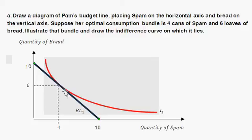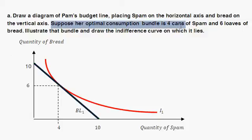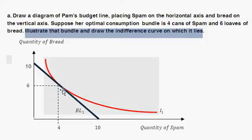You can think of this as like a topographic map — the indifference curve represents altitude, and the higher you are, the higher the utility. There's a hill going off in this direction, with altitude lines representing higher and higher utility. Pam is going to maximize her utility by choosing the consumption bundle where the highest indifference curve possible is exactly tangent to her budget constraint. The question says suppose the optimal consumption bundle is four cans of spam and six loaves of bread. So here's four cans of spam and six loaves of bread — illustrate the bundle and draw the indifference curve on which it lies.